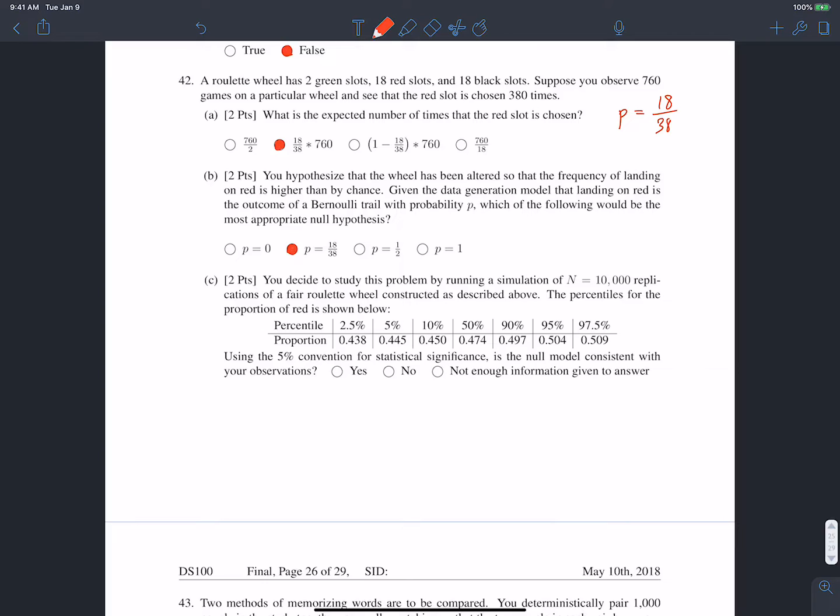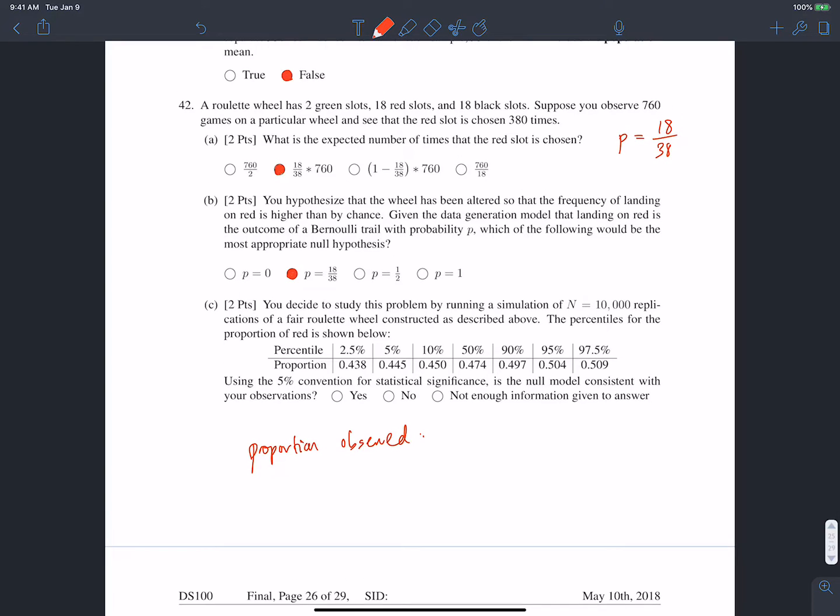OK, C, you study this problem by running a simulation of 10,000 replications, and the percentiles for the proportion of red are shown below. Using the common 5% convention for statistical significance, is the null model consistent with your observations? OK, so first of all, we should probably calculate the proportion for our observed. OK, i.e., we should calculate the test statistic for our observation. And we're told that we observe 760 games and 380 of them were red. OK, so our proportion observed is 380 out of 760, which is actually 1 half.